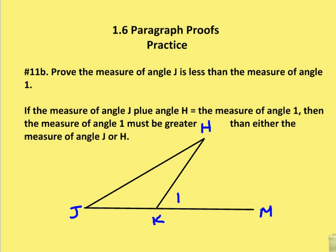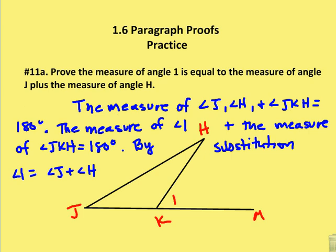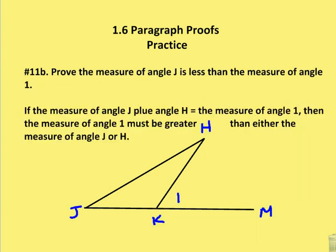So I know that from the prior slide we showed that the measure of angle J and angle H is equal to the measure of angle 1. So I know that if angle J plus angle H is equal to angle 1, I know that angle 1 must be greater than either angle J or angle H.